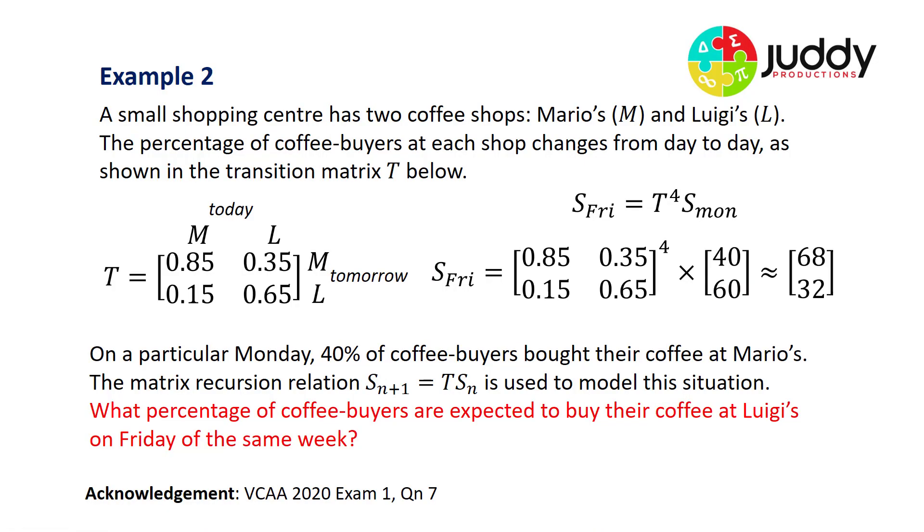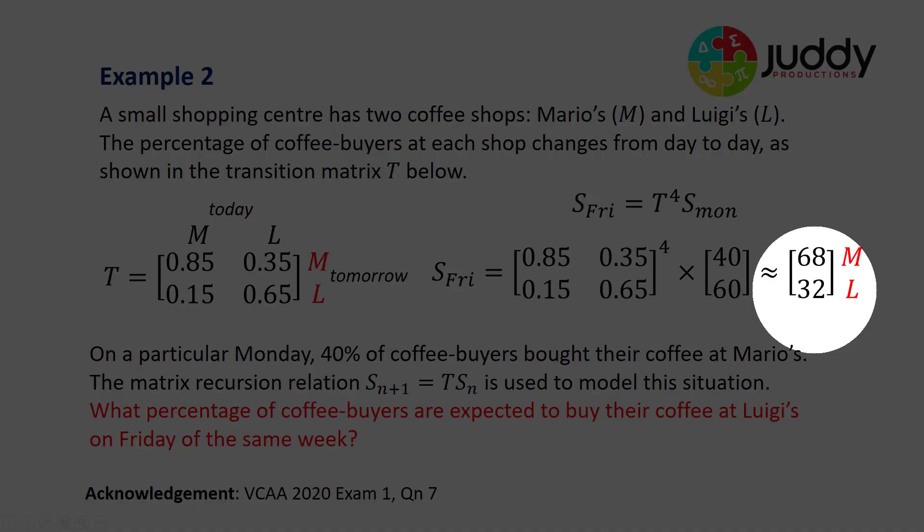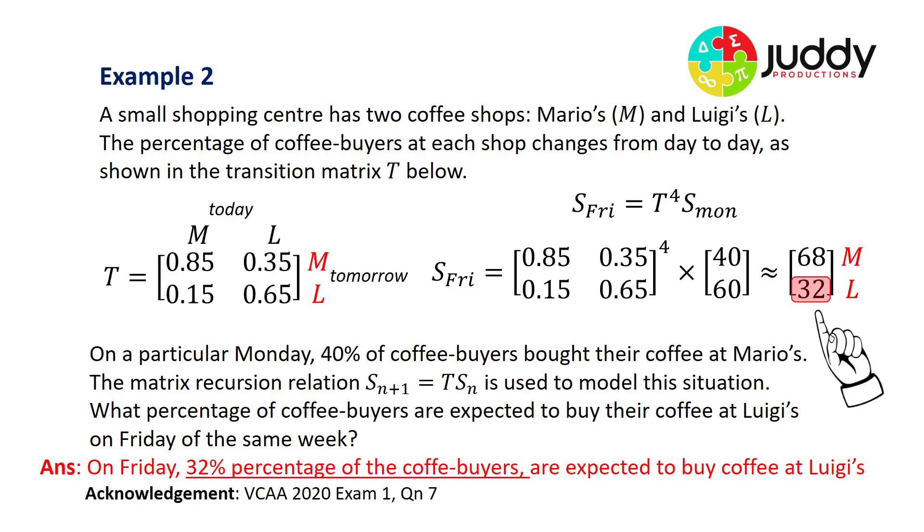Let's perform our calculation. What percentage of coffee buyers are expected to buy their coffee at Luigi's on Friday of the same week? Mario's is at the top of the Friday state matrix and Luigi's is at the bottom. Our answer is on Friday, approximately 32% of the coffee buyers are expected to buy their coffee at Luigi's.